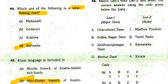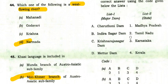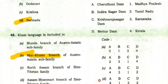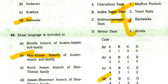Match List 1 with List 2 for major dams and states. The right answer is D: Cheruthoni Dam — Kerala; Indira Sagar Dam — Madhya Pradesh; Krishna Raja Sagar Dam — Karnataka; Mettur Dam — Tamil Nadu. Remember these important dam locations.